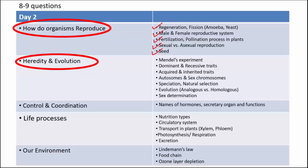When it comes to heredity and evolution, Mendel's experiment is obviously very important, covering dominant and recessive traits, acquired and inherited traits, and autosomes and sex chromosomes. In this chapter you also need to learn about evolution, speciation, natural selection, and sex determination. These 2 chapters are the most important in biology, so it is advisable to revise them thoroughly. Spend the first half of day 2 on these 2 chapters and do them very carefully.